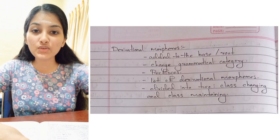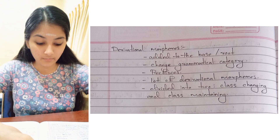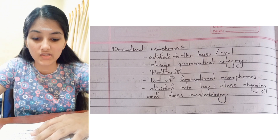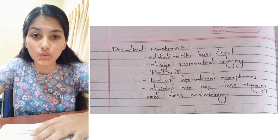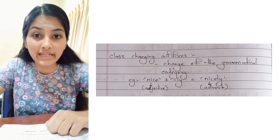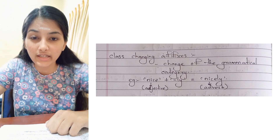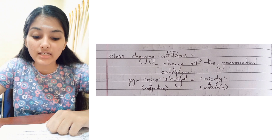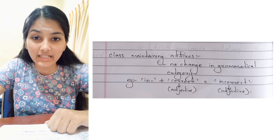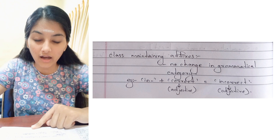Derivational morphemes are morphemes that are added to a base word, changing its grammatical category. All prefixes in English are derivational. There are many derivational morphemes or affixes, but for easy understanding we can divide them into two: class-changing affixes and class-maintaining affixes. Class-changing affixes lead to a change in the grammatical category of the word — for example, nice + ly = nicely, where 'nice' is an adjective and 'nicely' is an adverb. Class-maintaining affixes do not change the grammatical category — for example, in + correct = incorrect, where both 'correct' and 'incorrect' are adjectives.